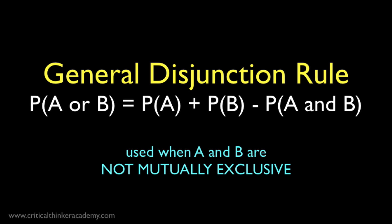In the last video, we looked at the disjunction rule applied to the special case where the events in question are mutually exclusive. Now let's look at the general rule, which also applies to cases where the events are not mutually exclusive.